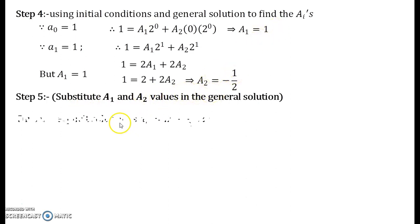Thus we go to step 5. We substitute A₁ and A₂ the values that we got in the general solution and our explicit solution is obtained as a_n equal to 2^n minus half into n times 2^n. The star equation that we had marked. So now if you solve it further you obtain a_n equal to 2^n minus n times 2^{n-1}.